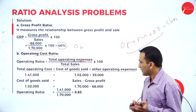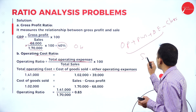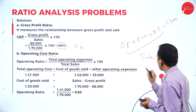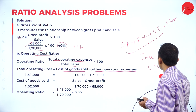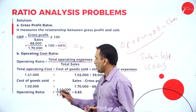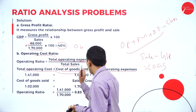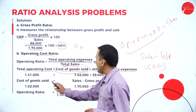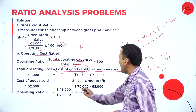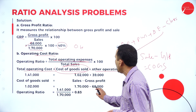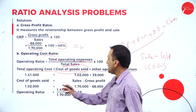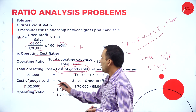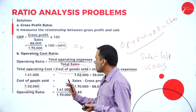Alternatively, a simpler formula: cost of goods sold equals sales minus gross profit. That is also possible to find cost of goods sold. Sales is 1,70,000; subtract gross profit and we easily get cost of goods sold as 1,02,000.